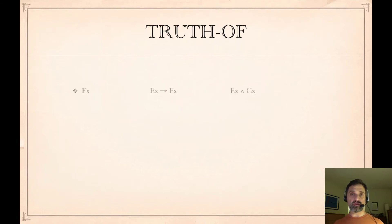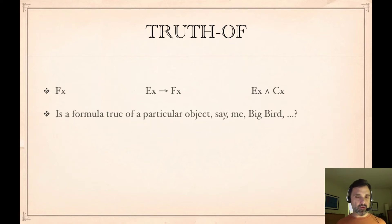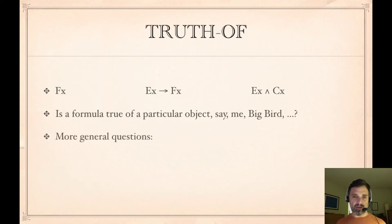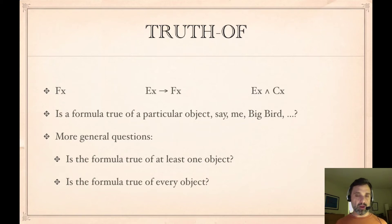We also want to remember our notion of truth-of. We have formulas like Fx, if Ex and Fx, and Ex and Cx. For each of these we can ask: is that formula true of a particular object when x refers to that object? So is Fx true when x refers to me? Is Fx true when x refers to you? Is Fx true when x refers to Big Bird? We can also ask questions like: is a formula true of at least one object? And is a formula true of every object? We have this notion that the formula is going to be true or false of things.